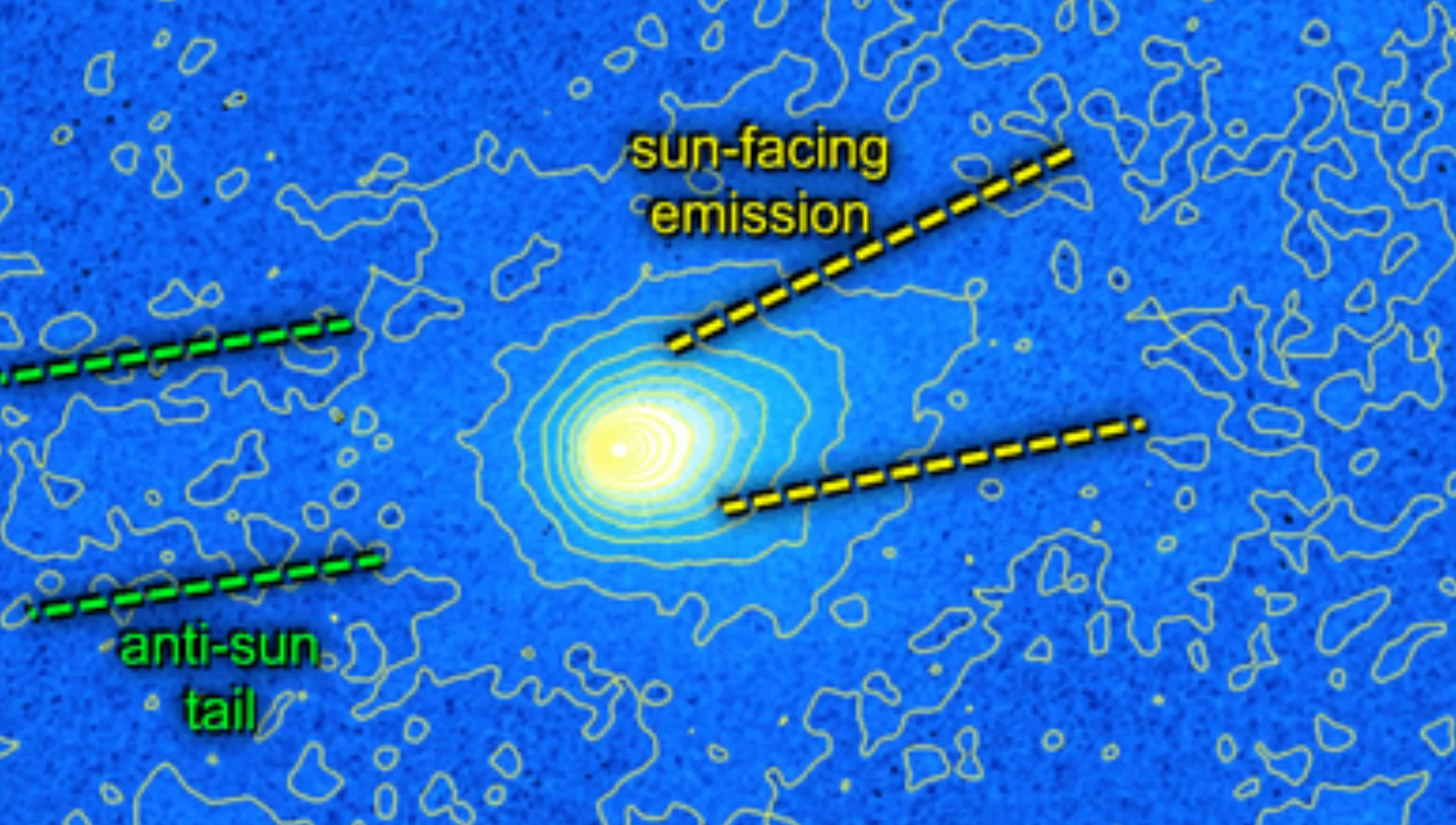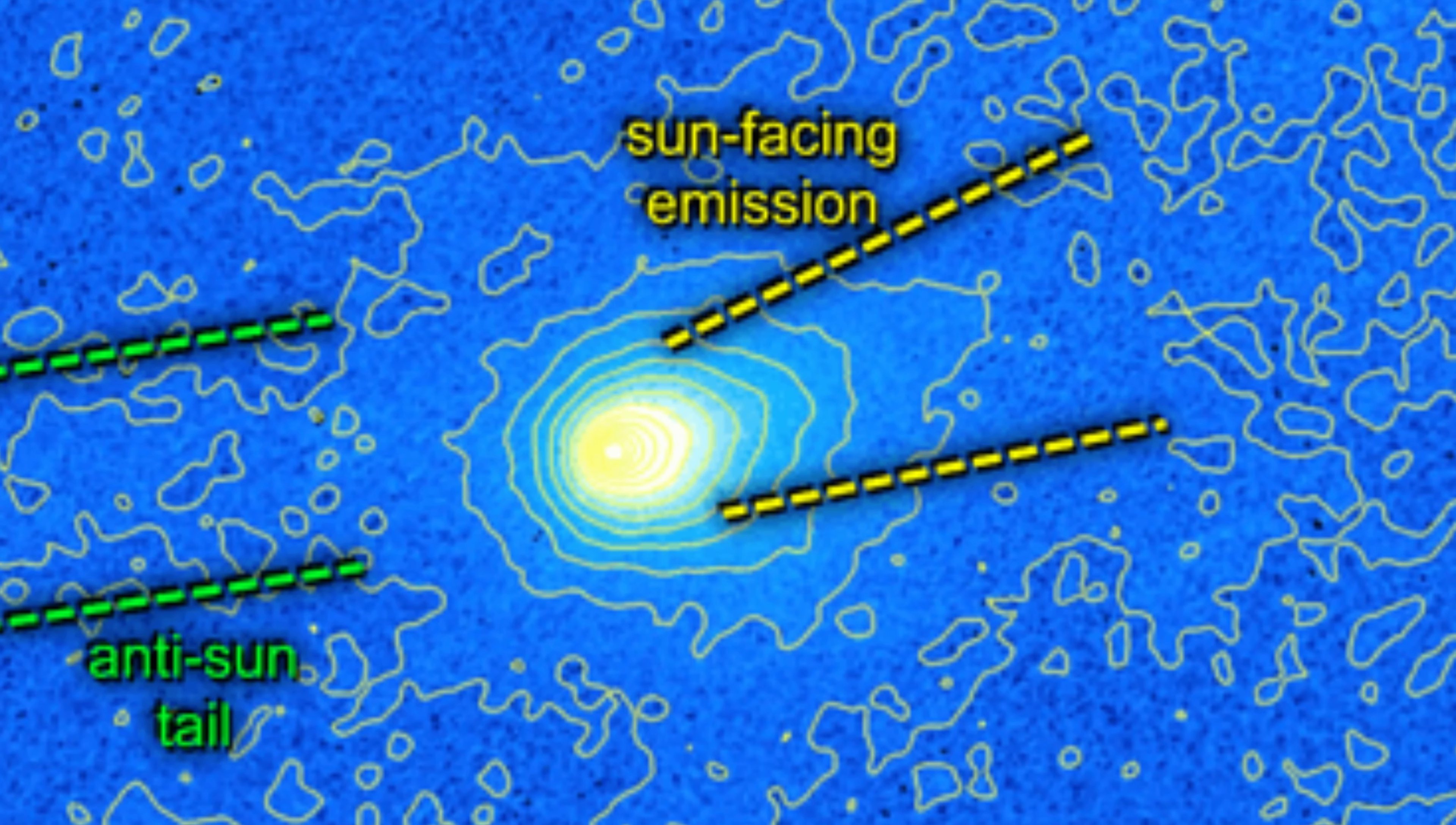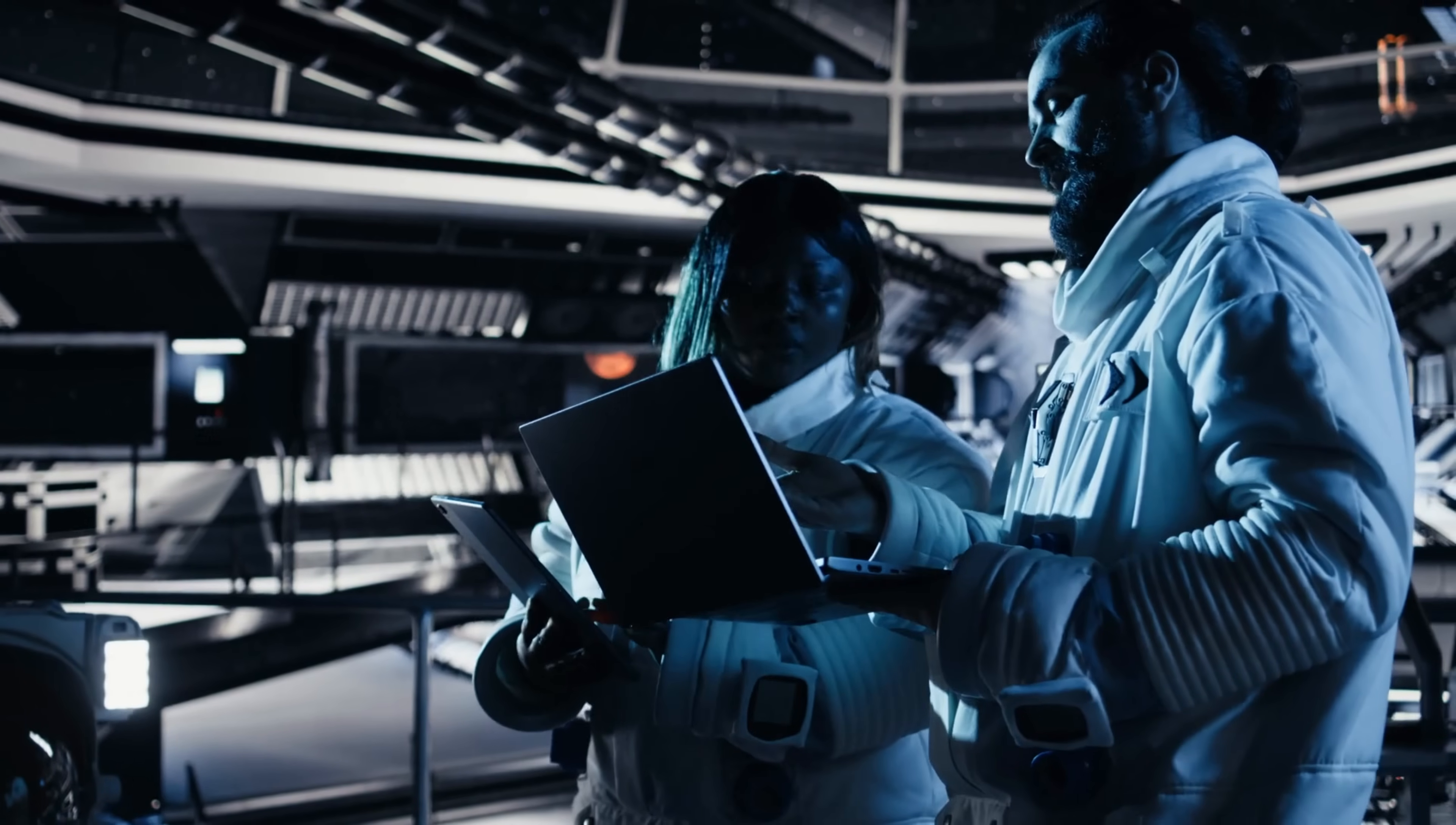Either 3i Atlas is governed by a natural but unfamiliar mechanism capable of creating long-range directed particle structures, or something more actively controlled is shaping its environment.